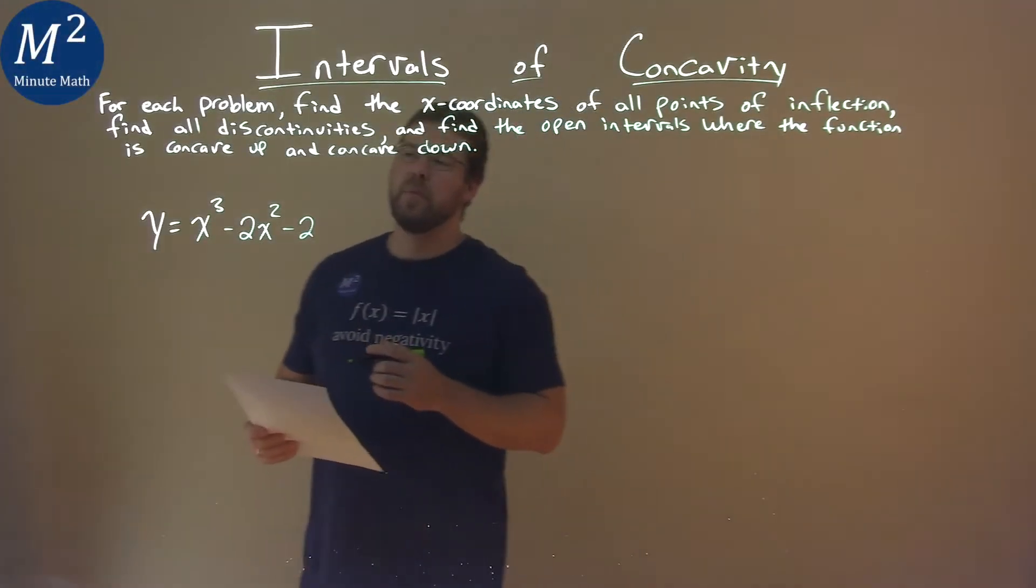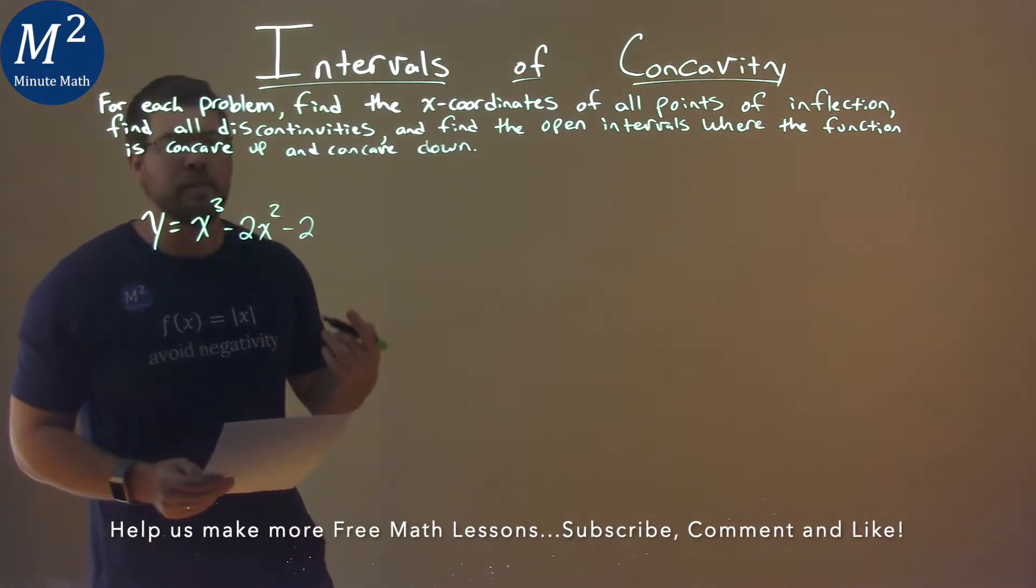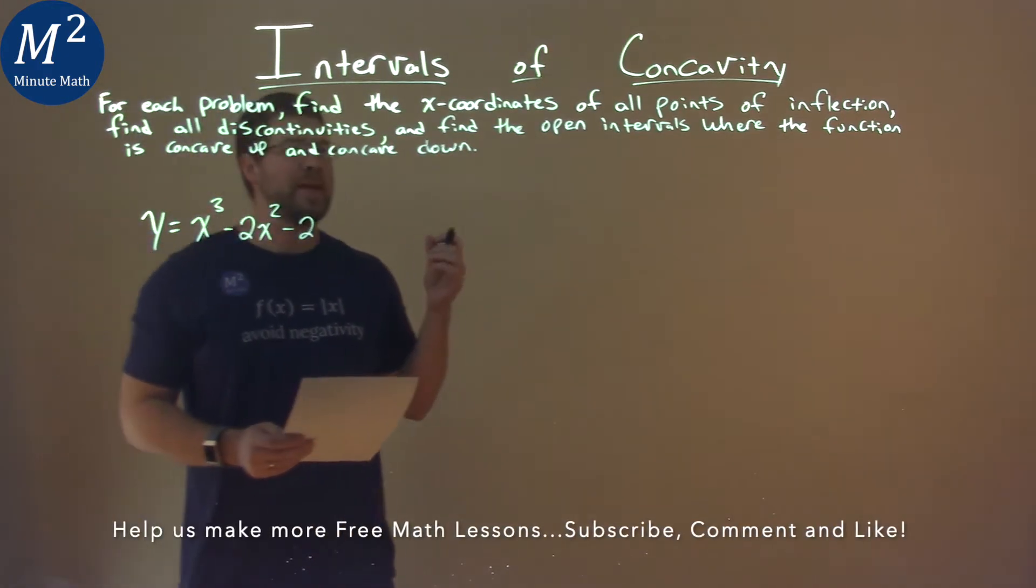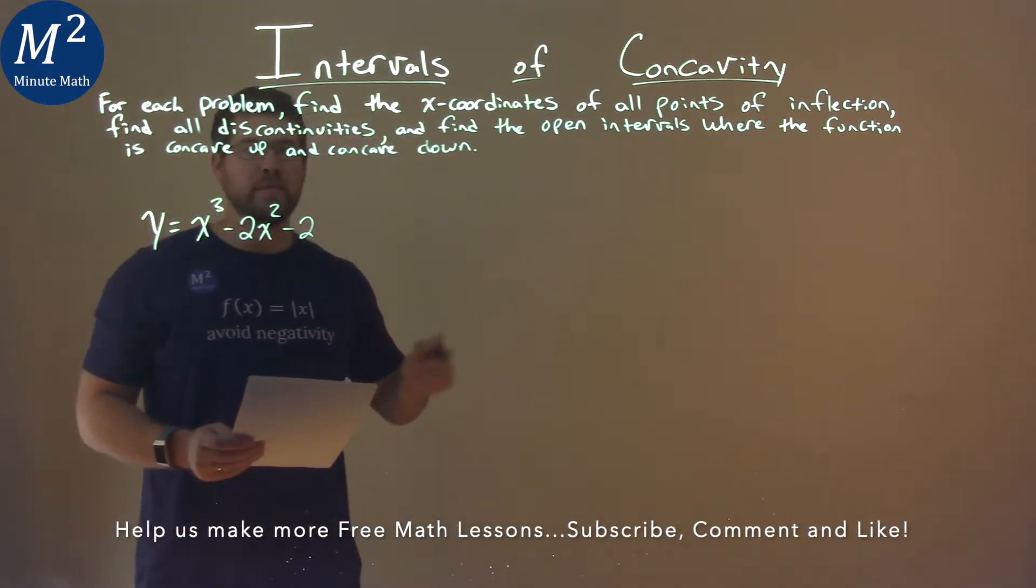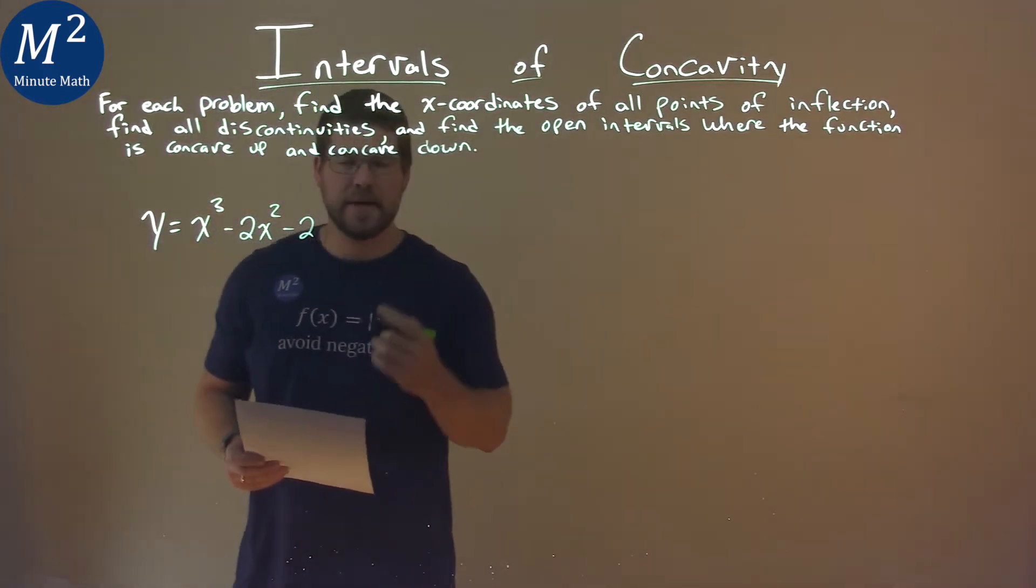We're given this problem: y = x³ - 2x² - 2. We're going to find the x-coordinates of the points of inflection, find all discontinuities, and find the open intervals where the function is concave up and concave down.